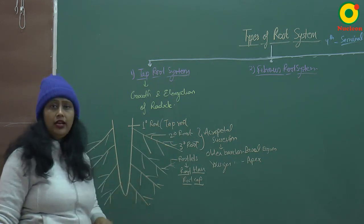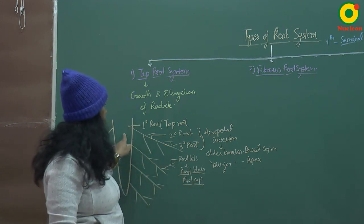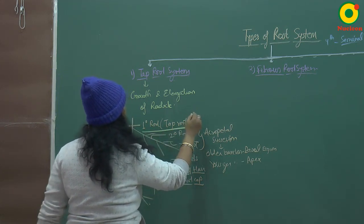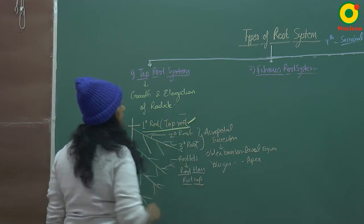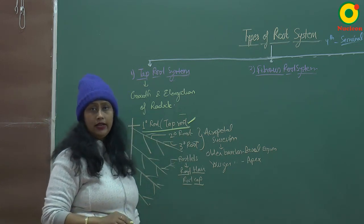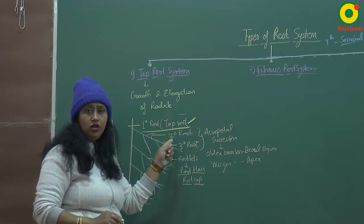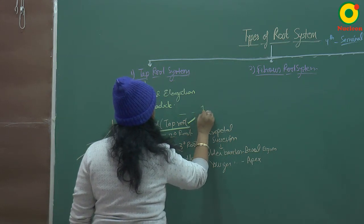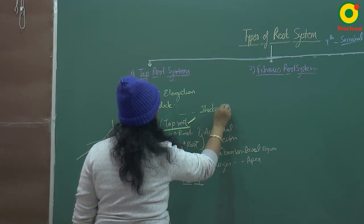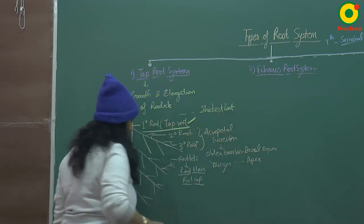The tap root is the primary root, which is mainly the tap root. It is the thickest root of all the types of roots. In every type of root, the thickest root is the primary root. So the first point about the tap root is that it is the thickest of all types of roots.